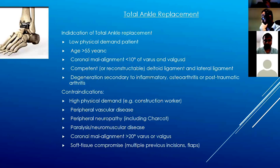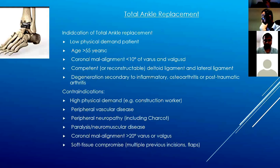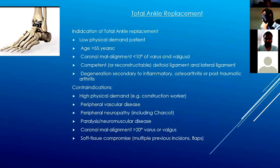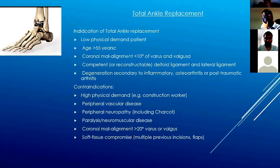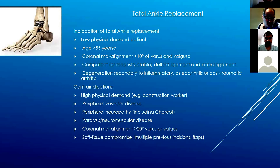Last but not least is total ankle replacement — another definitive surgical procedure you'll be asked about in the exam. I went down this route and talked about it in my exam. You need to know the indications and contraindications. I tend to learn only the absolute contraindications in the exam — if you mention relative ones the examiner may argue you can still do the procedure in those patients. Indications include low physical demand patients, age typically above 55 to 60 years.